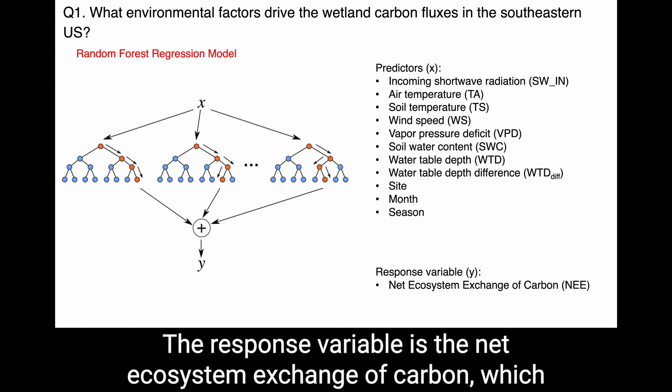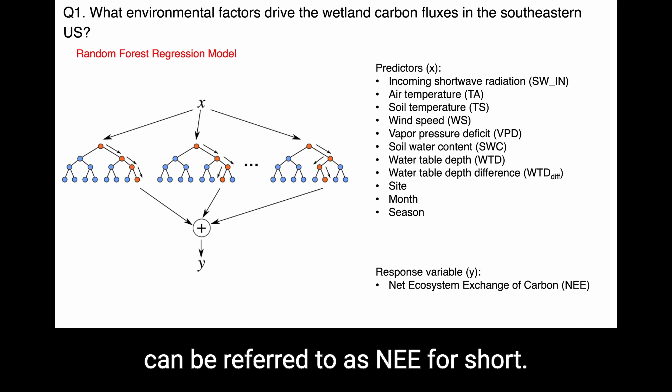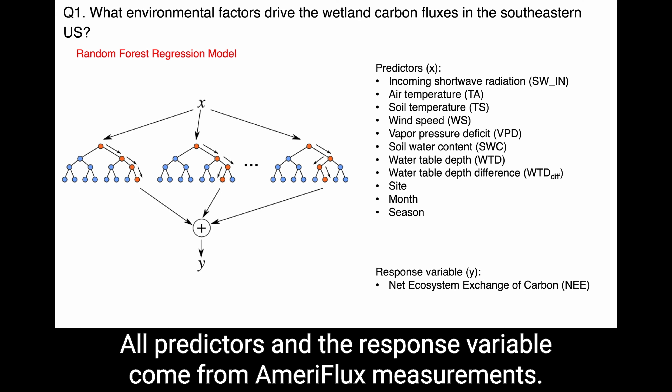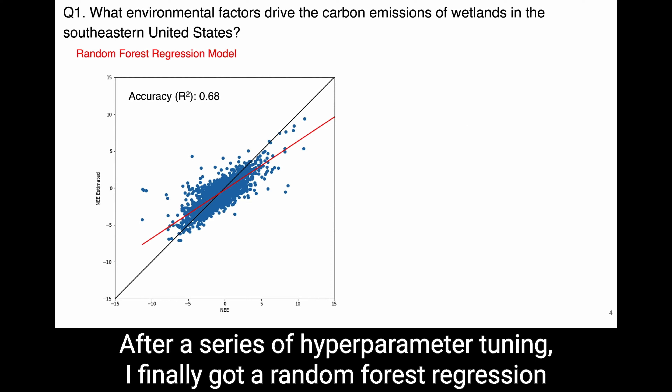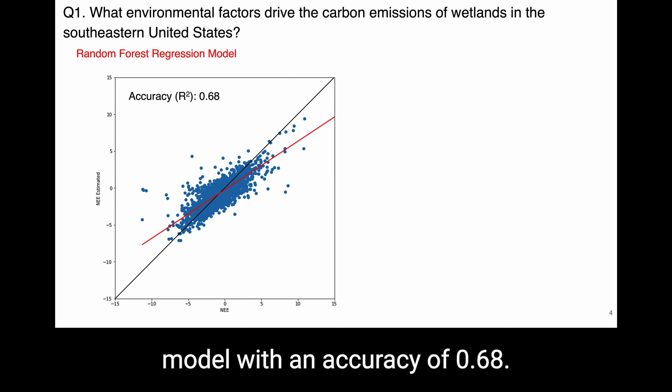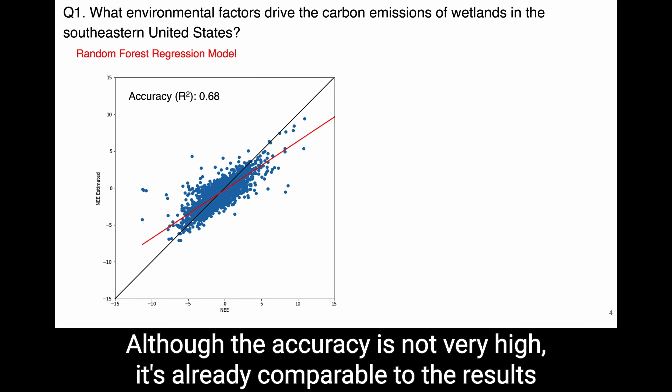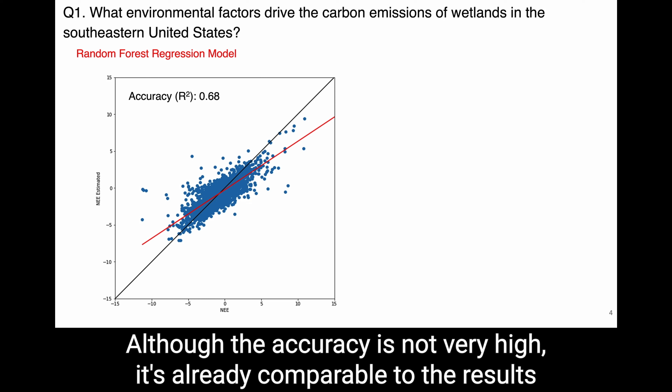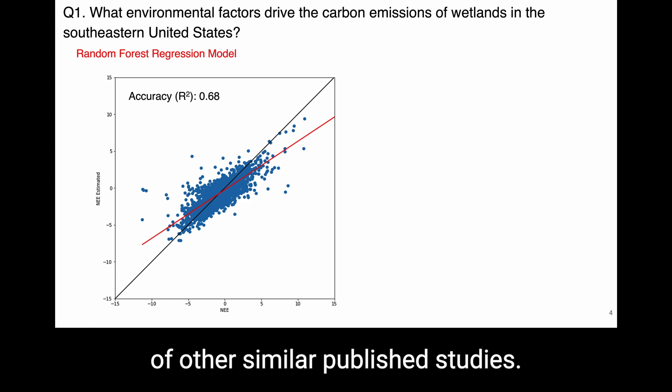The response variable is the net ecosystem exchange of carbon, referred to as NEE. All predictors and the response variable come from AmeriFlux measurements. After a series of hyperparameter tuning, I obtained a random forest regression model with an R² accuracy of 0.68, which is comparable to the results of other similar published studies.